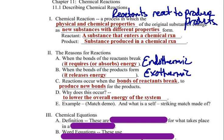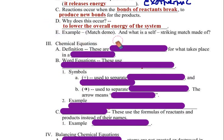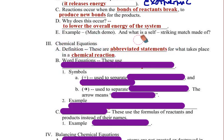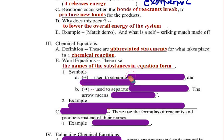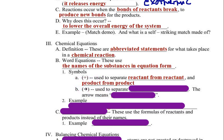The way we describe chemical reactions is with chemical equations. These are abbreviated statements for what takes place in a chemical reaction. We start writing them with word equations — this is the first step to understanding them. These use the names of the substances in equation form. The first symbol we're going to use is the plus sign, and it is used to separate reactant from reactant and product from product.